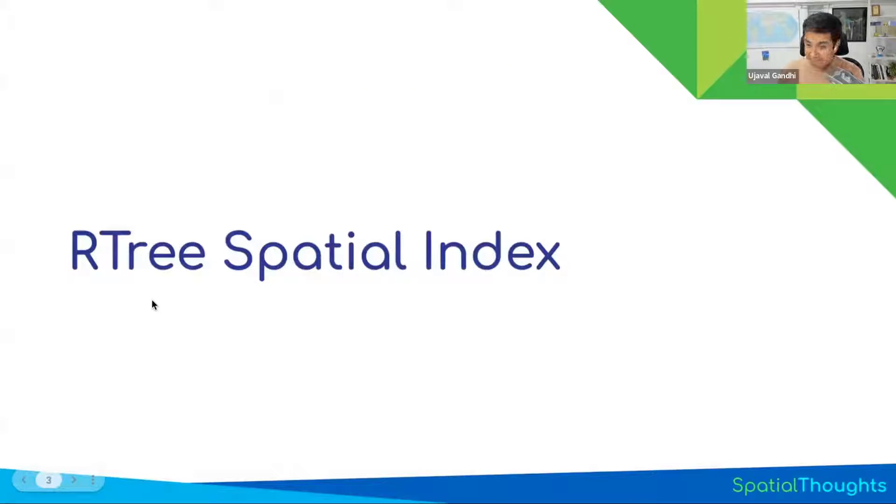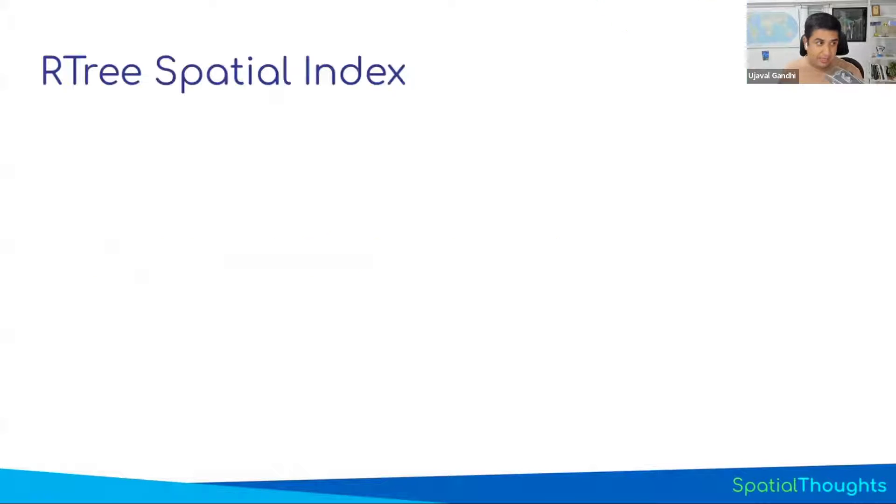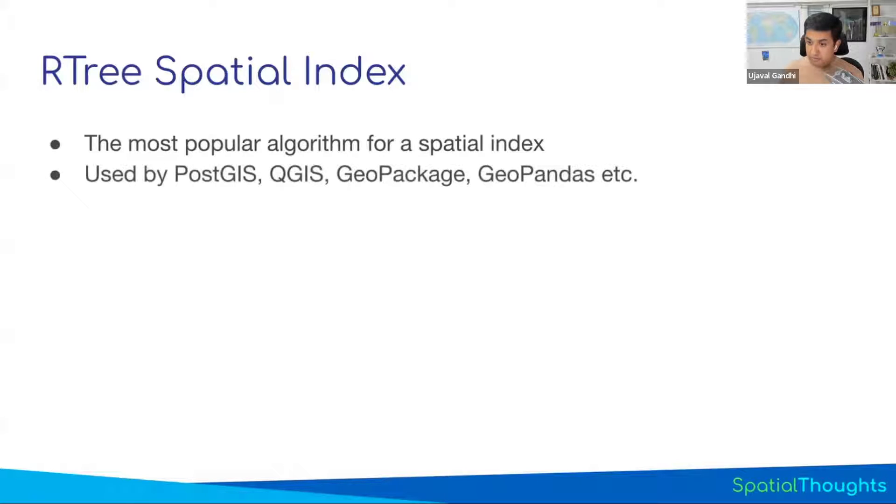The most commonly used index format for spatial data is this index called R-tree. R-tree is commonly used in all your GIS software. So if you use PostGIS, QGIS, Geopandas, every good software uses this index called R-tree. R-tree stands for rectangle tree. It means it uses bounding boxes of features to figure out where the feature is. So rectangle comes from the fact that it uses bounding boxes of features.